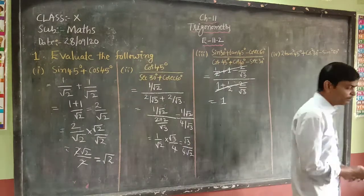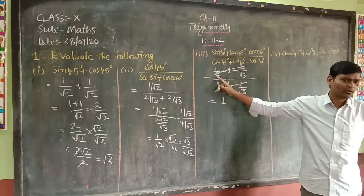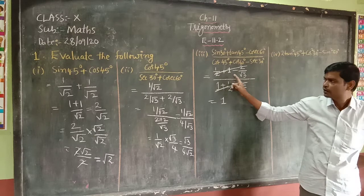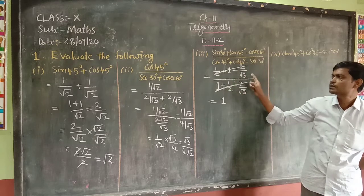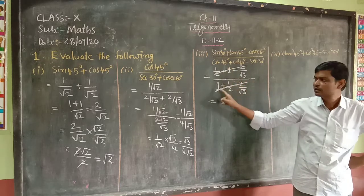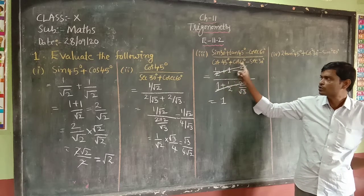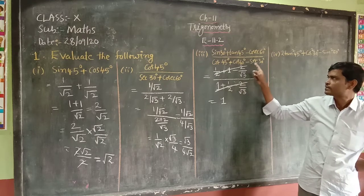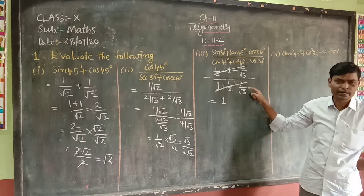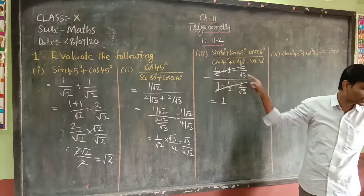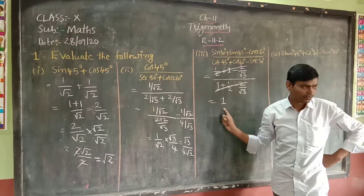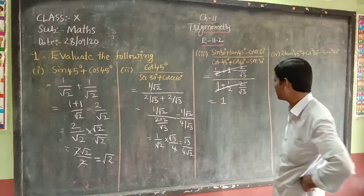Revision: sin 30° = 1/2, tan 45° = 1, cosec 60° = 2/√3 in the numerator; cot 45° = 1, cos 60° = 1/2, sec 30° = 2/√3 in the denominator. Both numerator and denominator are the same, so they cancel. The final answer is 1.